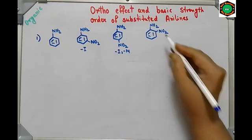At meta position, only −I effect operates — no resonance effect — so it is the least basic. At ortho position, −I and ortho effect decrease availability of electron density, but +M effect increases it. That is why ortho-methoxyaniline is more basic than the meta isomer. The order is: para > aniline > ortho > meta. Hope this ortho effect is clear. If you like this video, please subscribe. Thank you for watching.